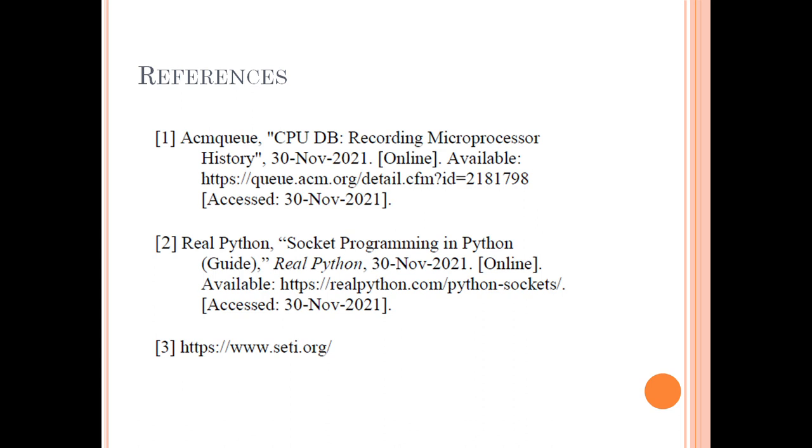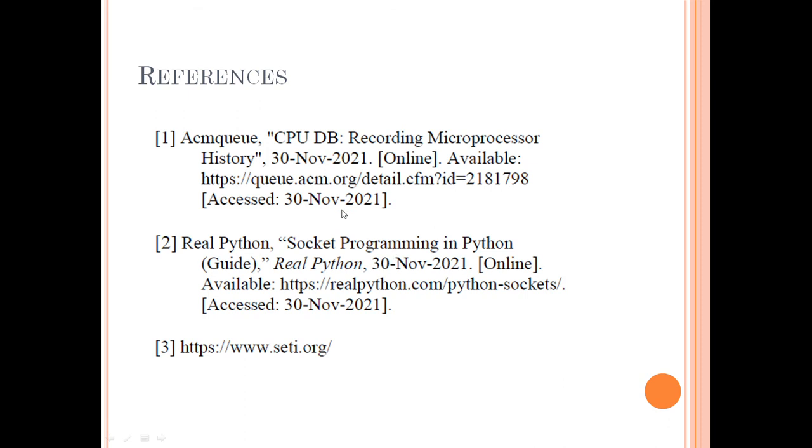The references here: this reference is the Python socket programming guide. This is a book of statistics on microprocessors showing the trend I mentioned with frequency scaling. And this is SETI's website. These were the primary references for this work. I'm sorry the previous PowerPoint did not have the background slides. It just had what appeared to be my mouse pointing at a PowerPoint program on the same slide. But this is the talk I meant to give earlier, and I hope it was interesting. Please leave any comments, questions, or concerns about distributed computing in the comments. Thanks, guys.